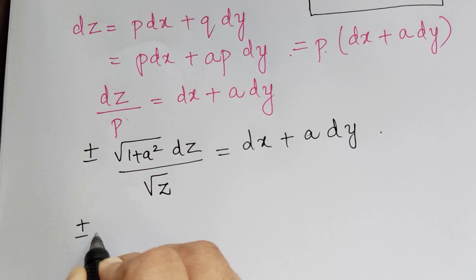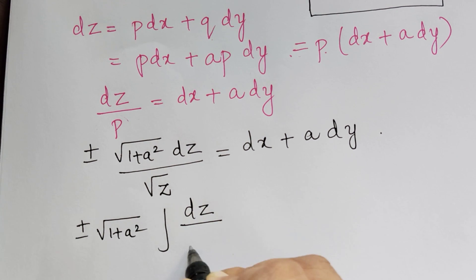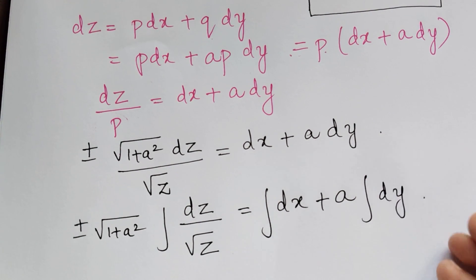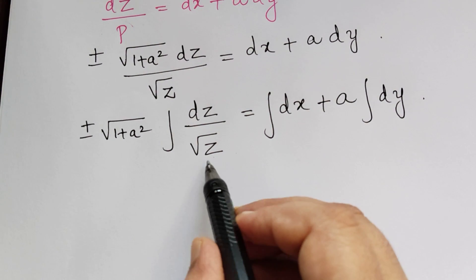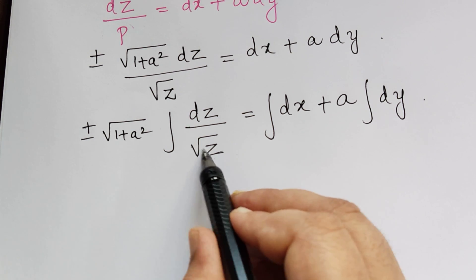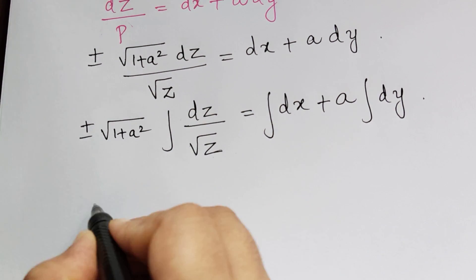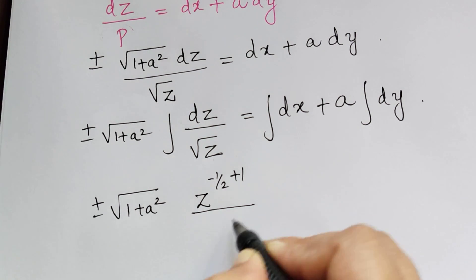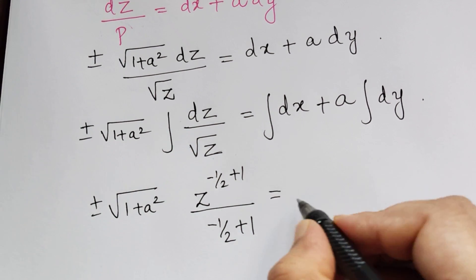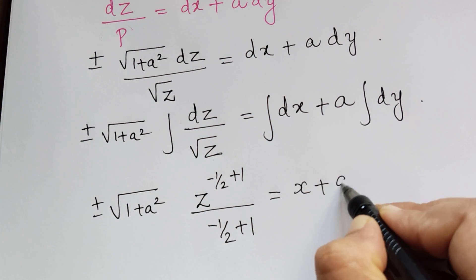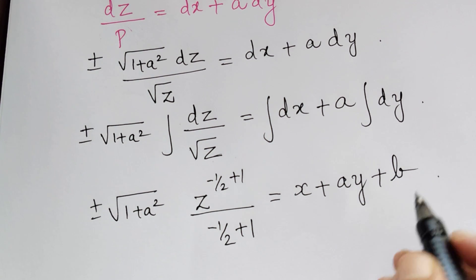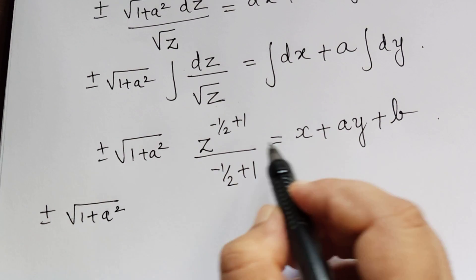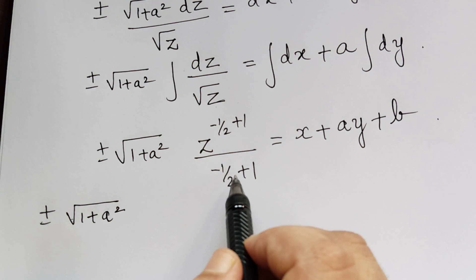Integrating on both sides — plus or minus square root of 1 plus a square is a constant — integral of dz by square root of z is equal to integral dx plus a times integral dy. The integral of dz by root z: square root of z is z to the power 1 by 2, and when taken to the numerator it becomes z to the power negative 1 by 2. On integration, z to the power negative 1 by 2 plus 1, divided by negative 1 by 2 plus 1, and so plus or minus square root of 1 plus a square multiplied by 2 square root of z.